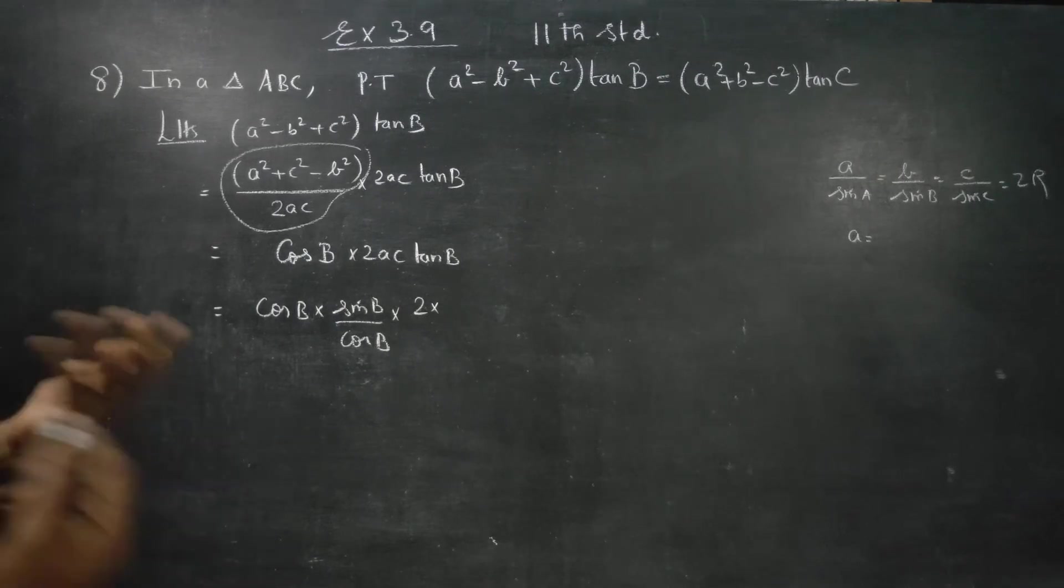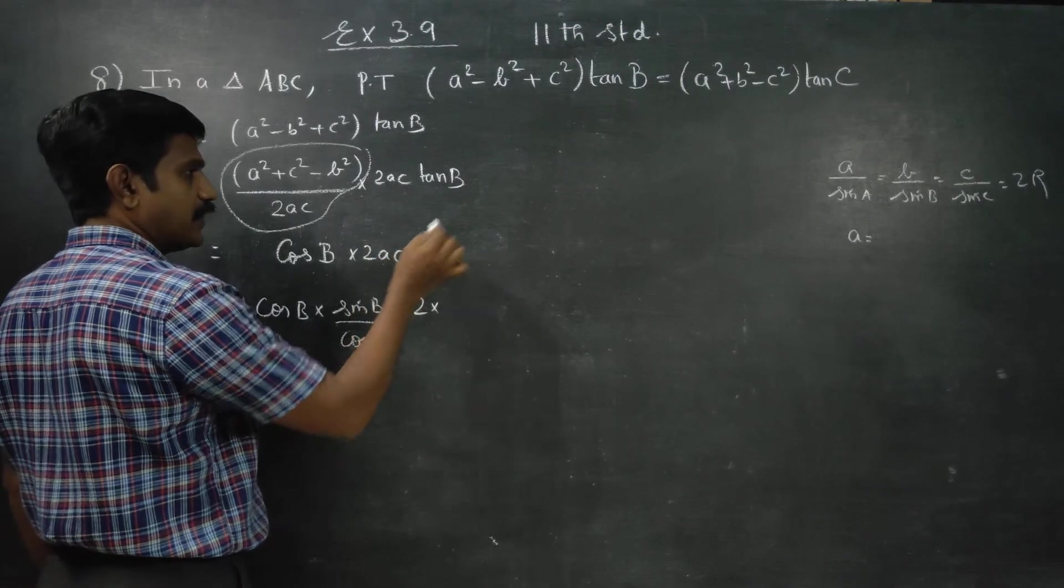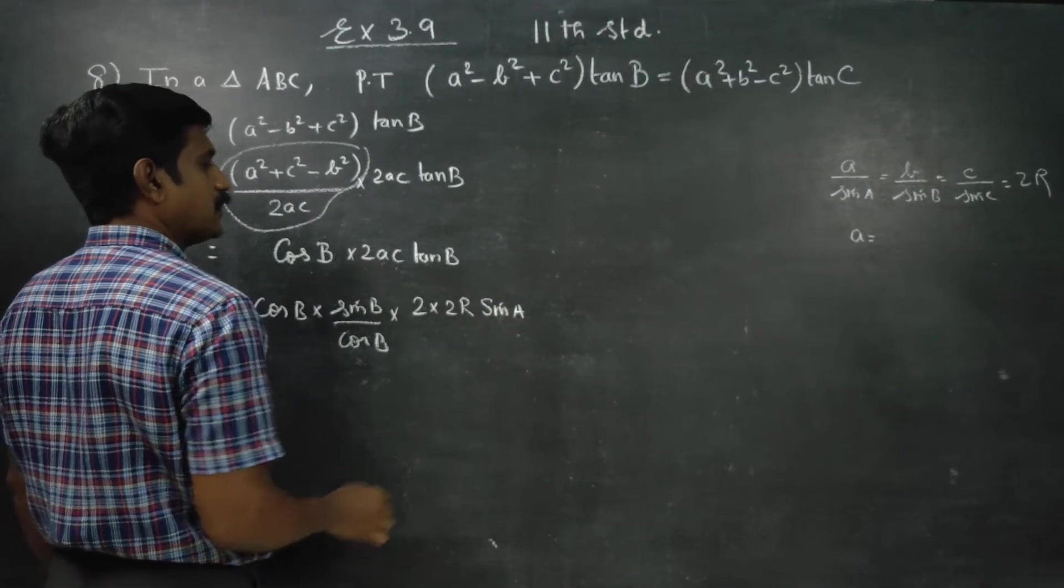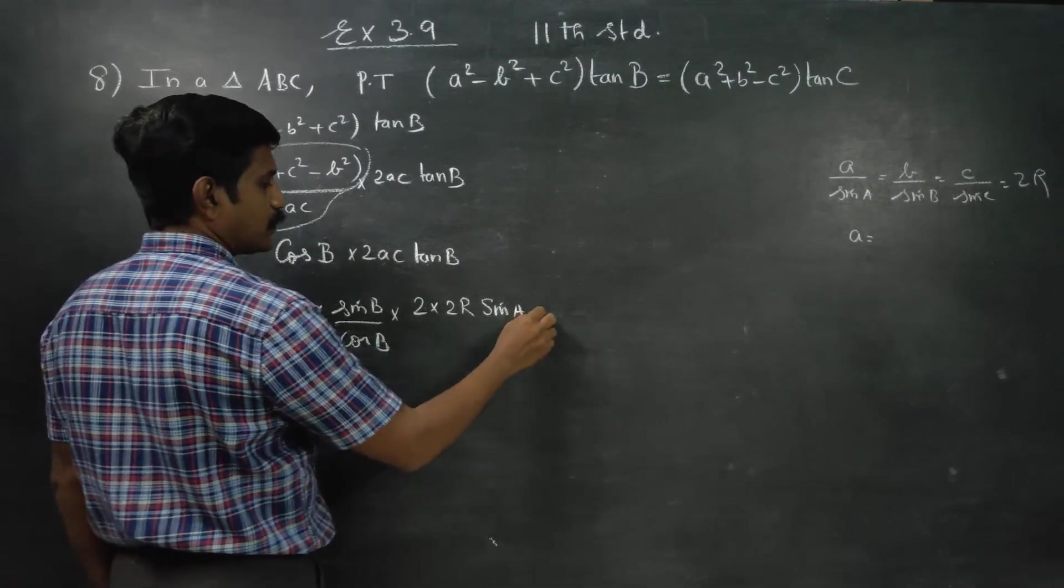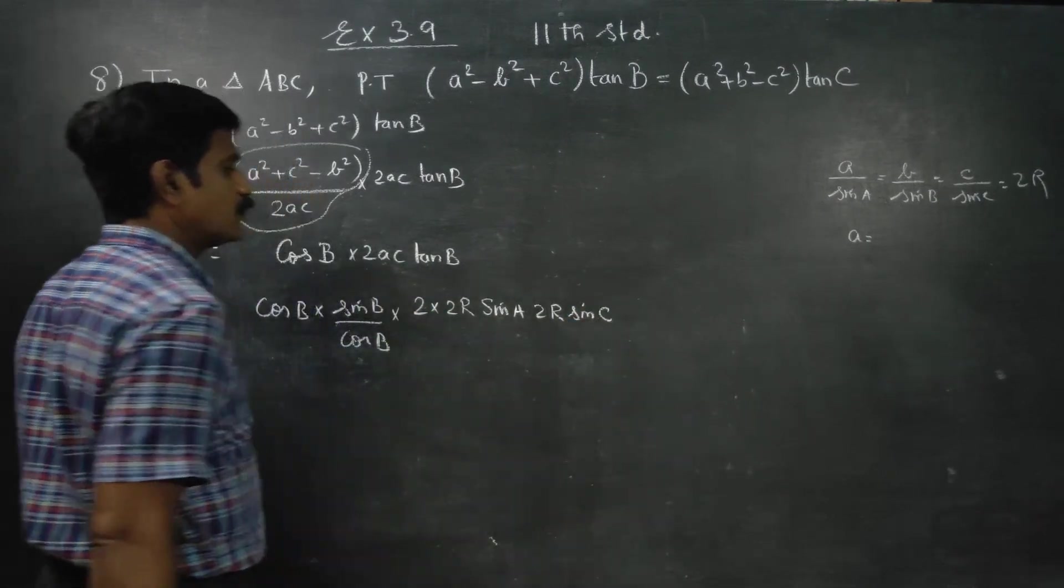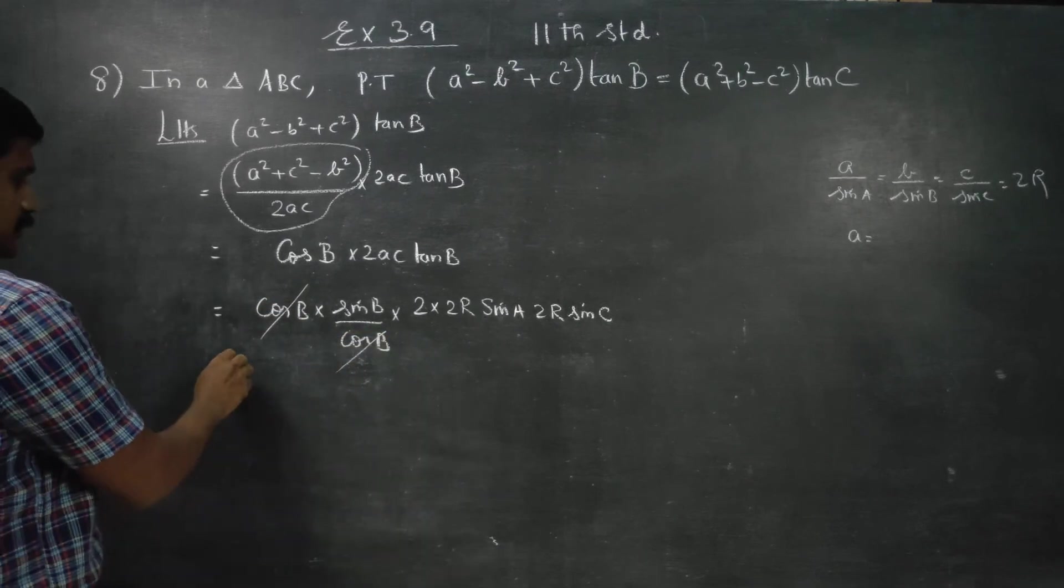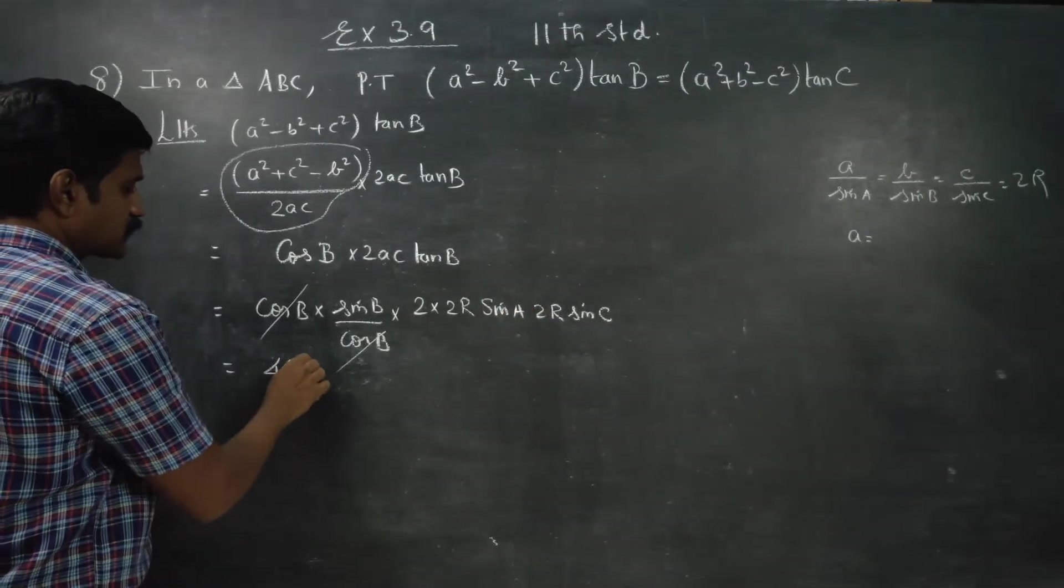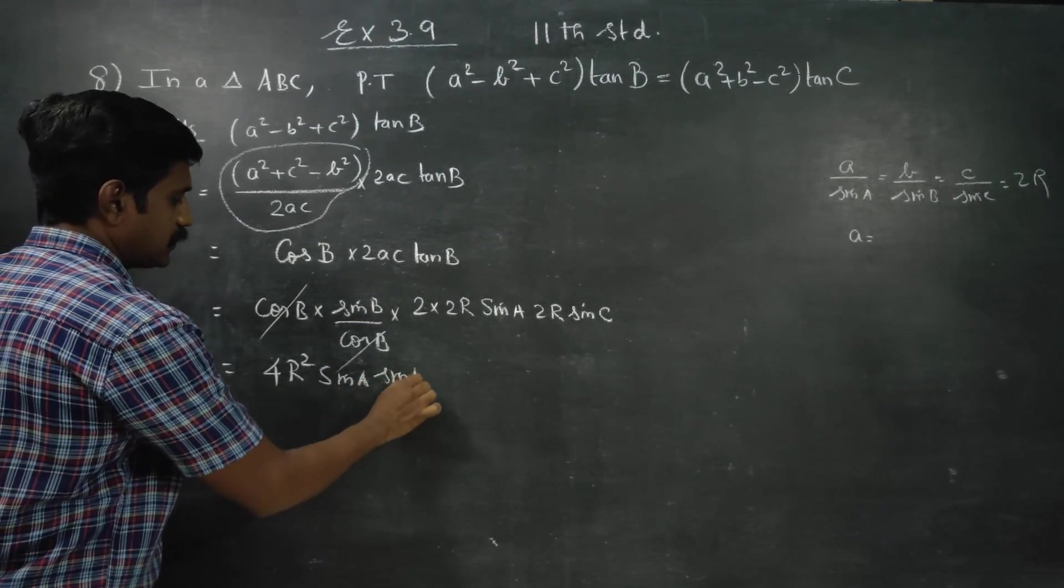So instead of A, I am going to write 2R sin A. Instead of C, I am going to write 2R sin C. Here cos and cos cancel. Therefore my final result will be 4R into R is 4R² sin A sin B sin C.